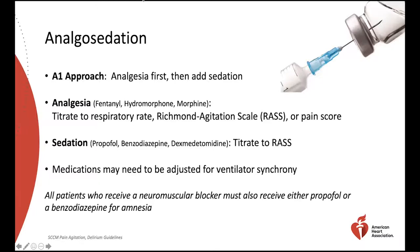Sedation with medications such as propofol, benzodiazepines, and dexmedetomidine should be added for agitation, anxiolysis, amnesia, and ventilator synchrony, and can be titrated to the Richmond Agitation-Sedation Scale. All patients who receive a neuromuscular blocker must also receive either propofol or a benzodiazepine for amnesia. Note that dexmedetomidine does not have amnestic properties and should not be used as a sole sedative for patients who are paralyzed.